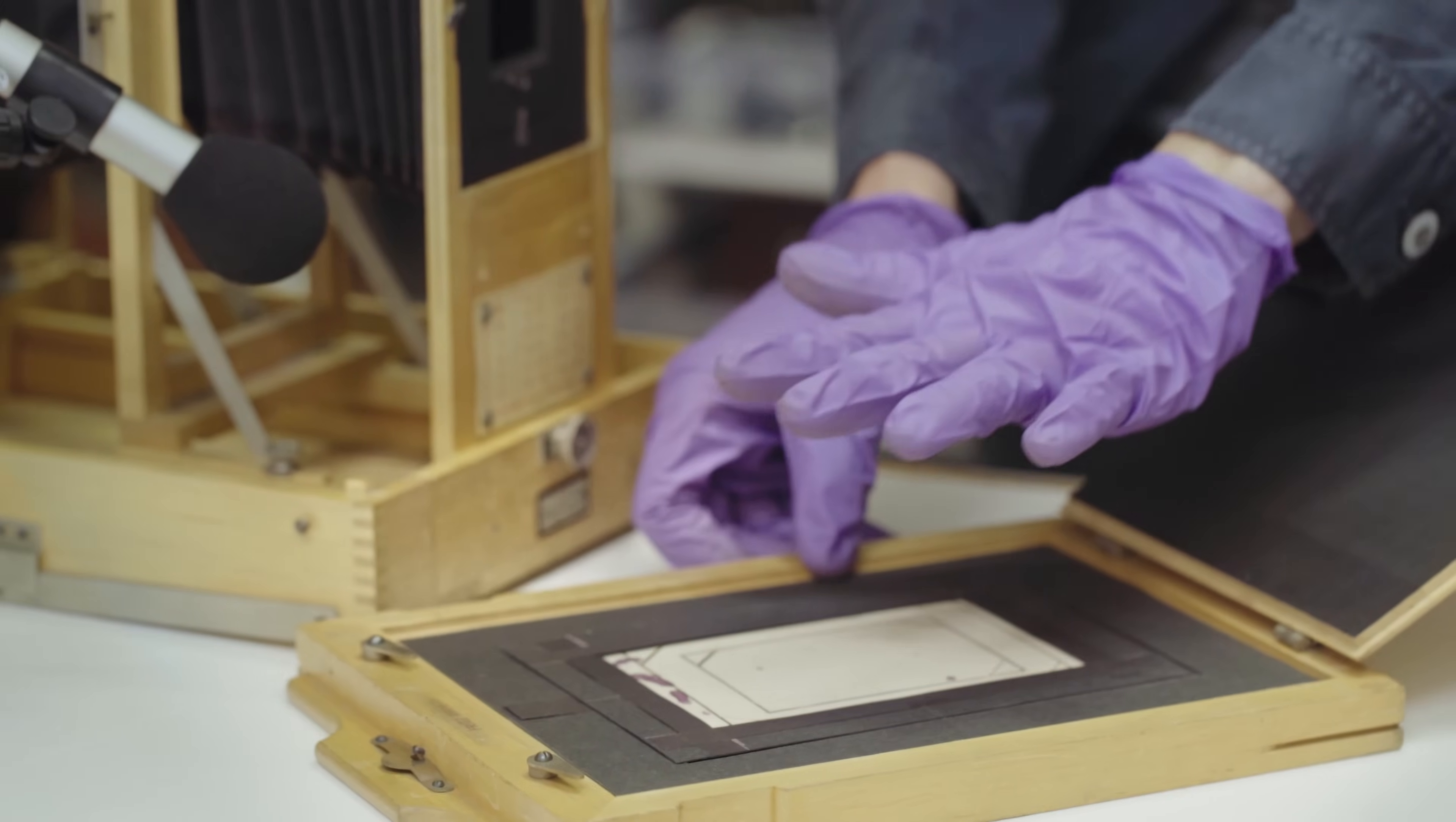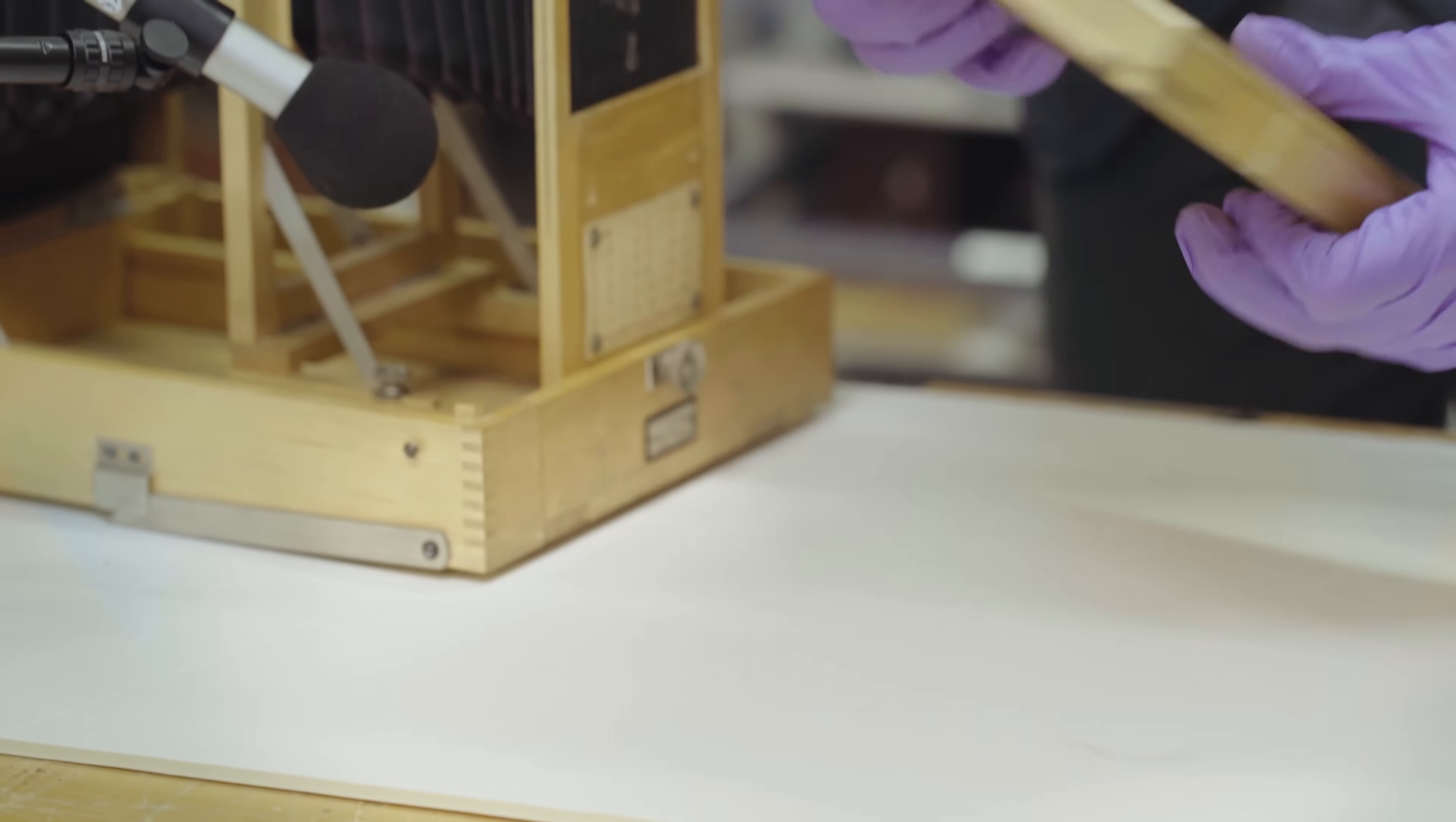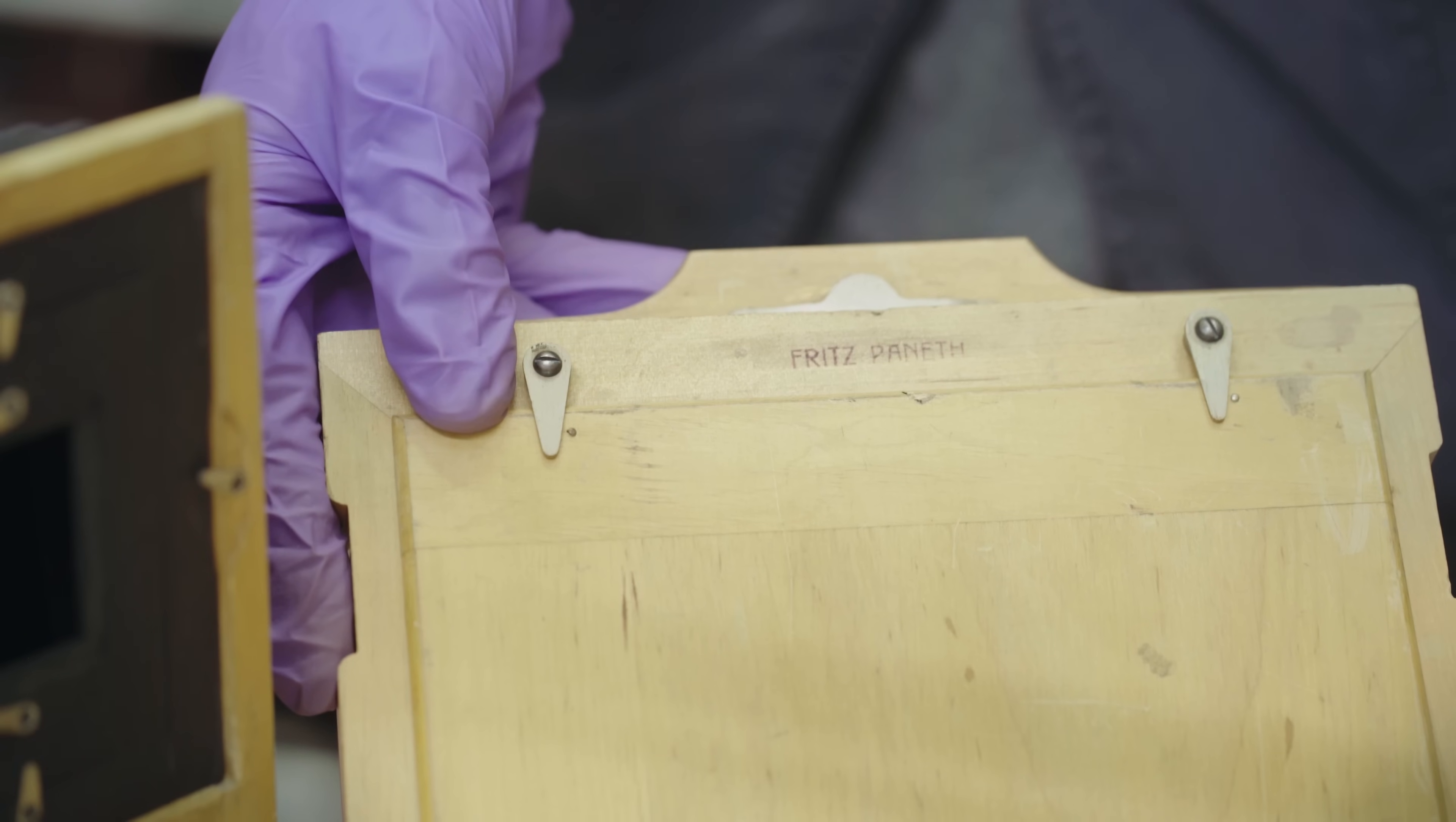So once your paper was securely held inside, this then becomes light tight and it's at this point you would then pop it into the back of the daylight enlarger, remove the dark slide and let the light come through.